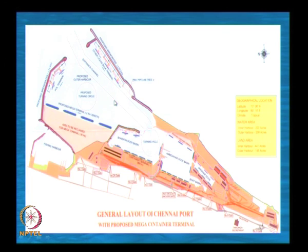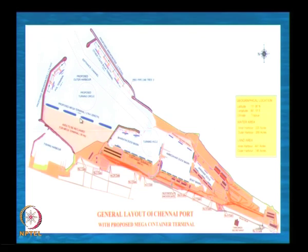We have another thing called harbor resonance. Harbor resonance means when there is a cyclonic condition, the wave period is generally very long. Corresponding to a wave period we have a wave length. Suppose that wavelength is a multiple of the harbor basin dimensions, then a resonance will take place. When resonance takes place, whatever waves are inside will go on increasing.